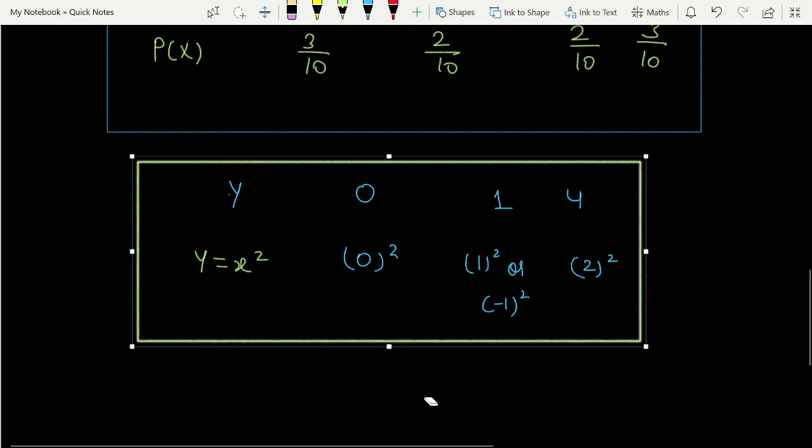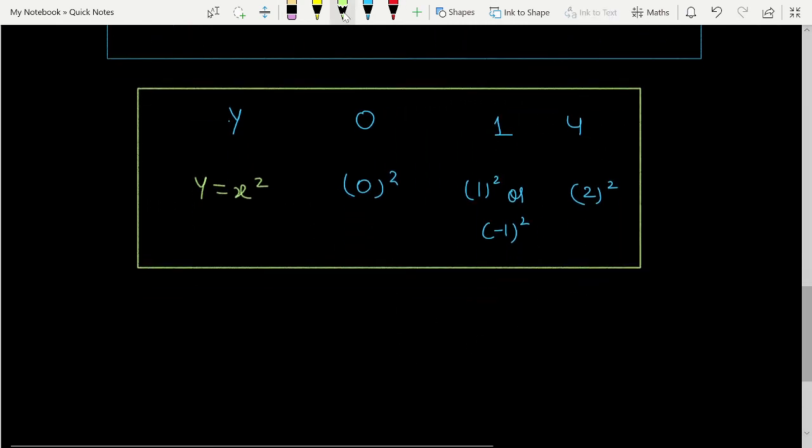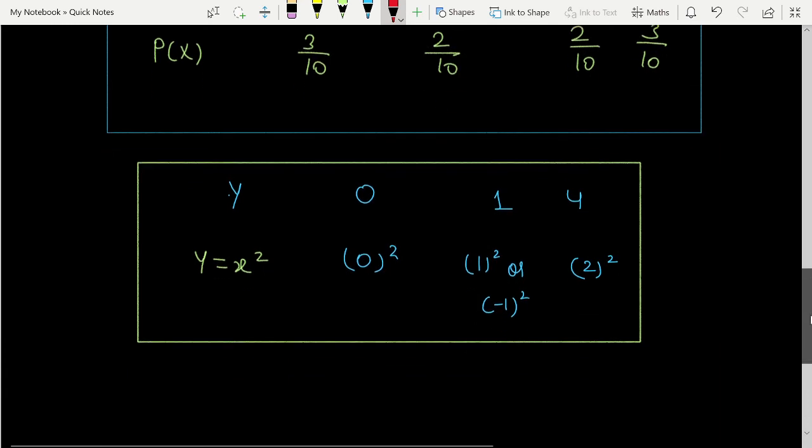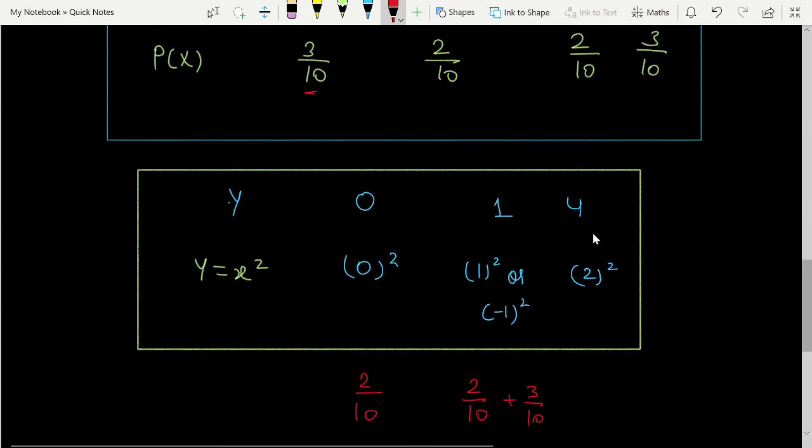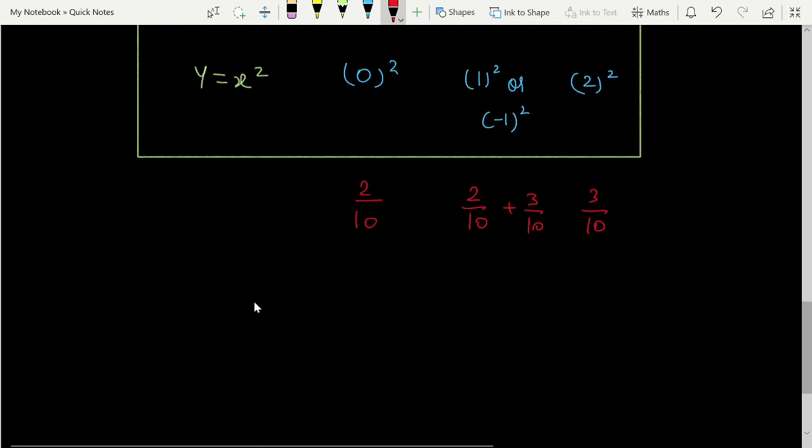These are three possible cases. Now let me write the corresponding probabilities. The probability of selecting zero is 2/10. For selecting one squared, you can select 1 with probability 2/10 or select -1 with probability 3/10, so these add to give 5/10. For selecting 2, the probability is 3/10. So these will add up.